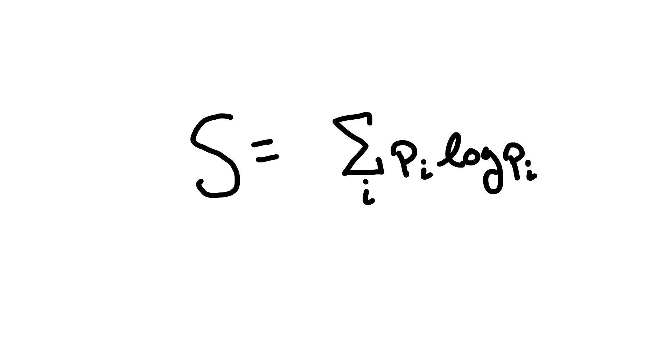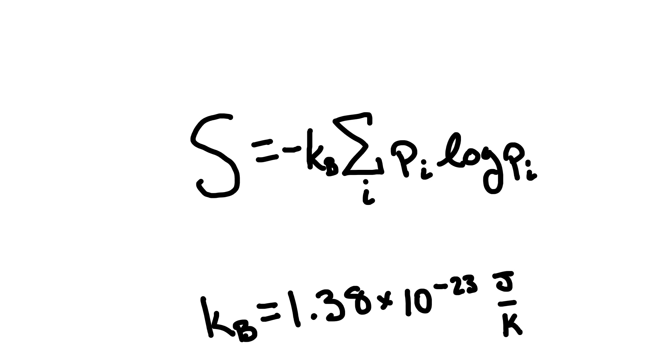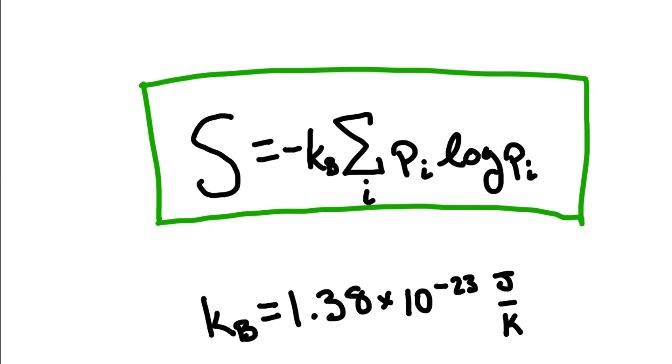Now, since the probabilities will always be between 0 and 1, and the logarithm of any number in this range is negative, we'll ensure that the entropy is always positive by multiplying this whole thing by a negative. Finally, we'll add in a constant, known as Boltzmann's constant, so that the entropy has units of joules per kelvin used historically. And there we have it. This is the definition of entropy in statistical mechanics.